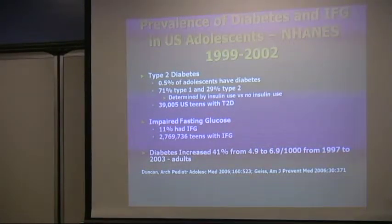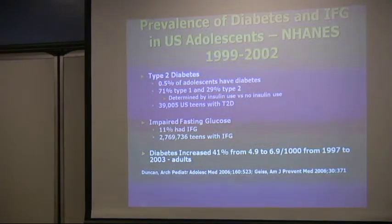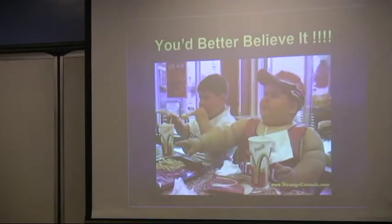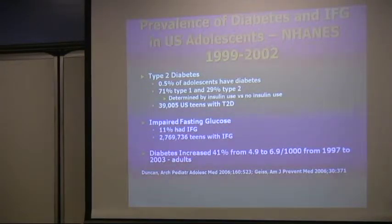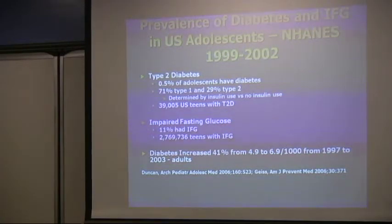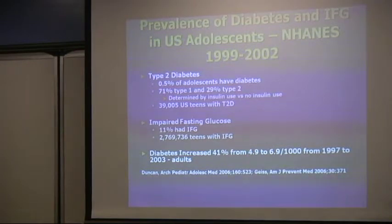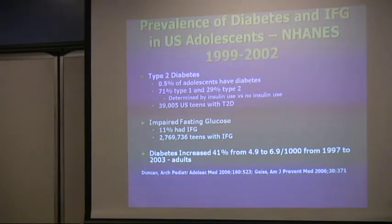From a 1999–2002 review published in 2006 by the Duncan group, the data indicate that the number of teens with type 2 diabetes in the United States is significant — approximately 39,000. However, the number is significantly higher when you look at teens with impaired fasting glucose, which is definitely concerning for risk of developing diabetes in the future.